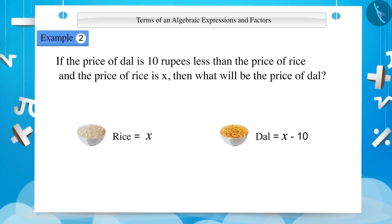It is very important to understand the information given to us to express a statement in an expression. A good way to understand the information is to simplify the language. In the given example, the price of dal is less than the price of rice by 10 rupees. Here, the value of rice is X. Thus, by deducting 10 from X, we get the price of dal.